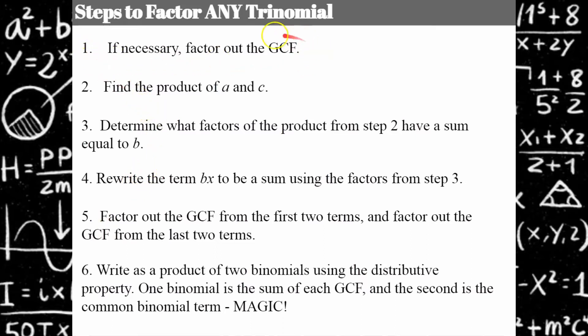Step one: if necessary, you factor out the GCF. This is not always necessary, and students often forget to begin every factoring problem thinking about this first — then they get to their binomial factors and they're not completely factored. If you see instructions that say 'factor completely' and keep this first step at the forefront of your mind, you will never fail at that.